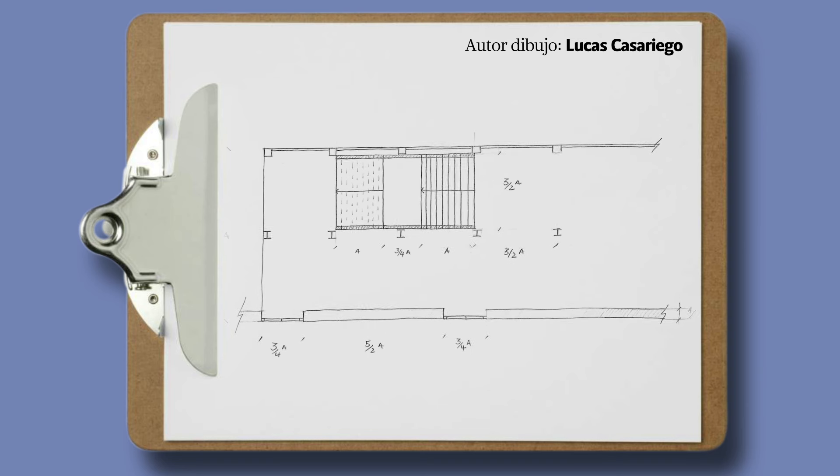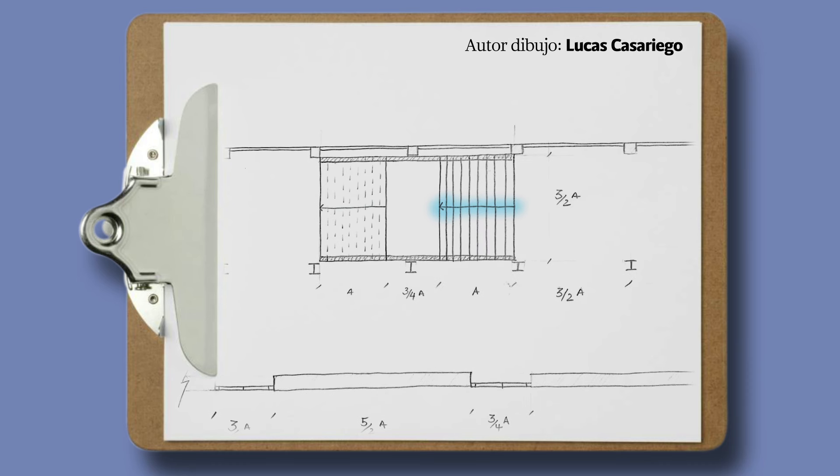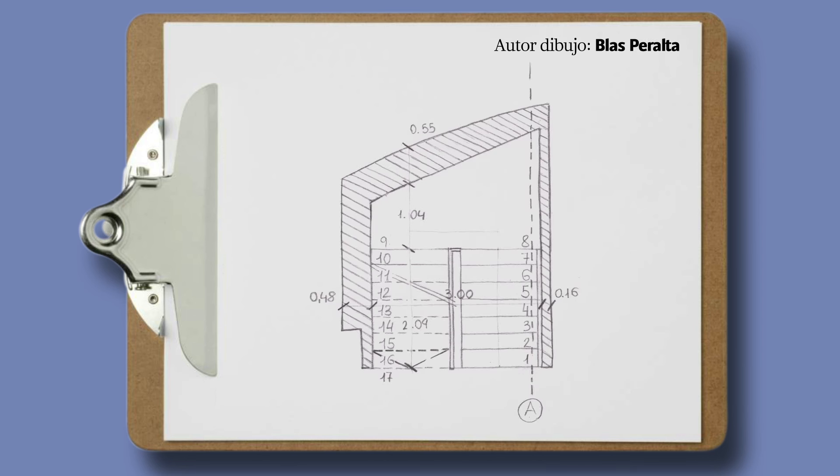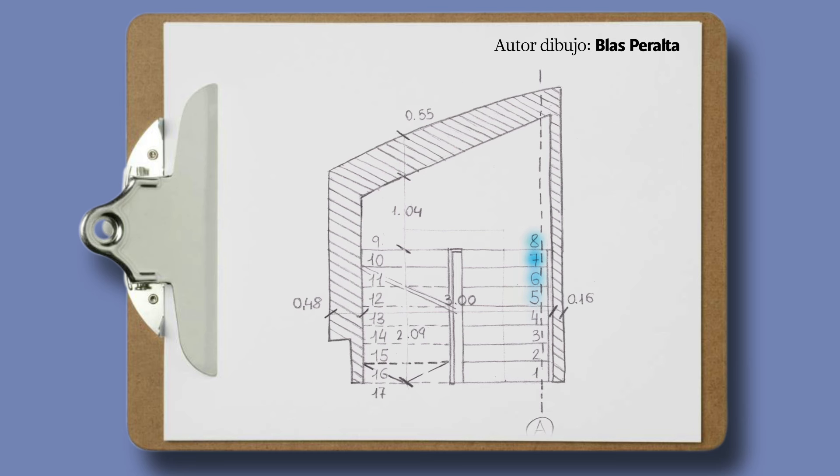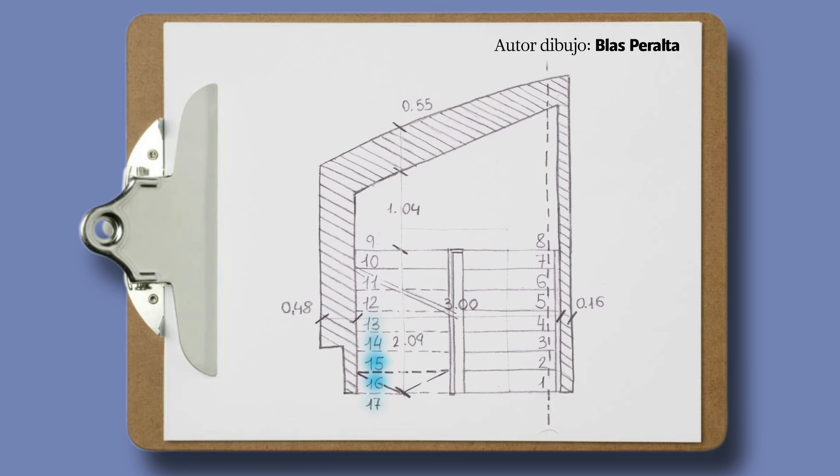Tanto las escaleras como las rampas han de tener una flecha en su parte central que representa siempre su sentido de subida. Otra opción para representar el sentido de subida es numerar los escalones desde el primero, el más bajo, al último, el más alto.